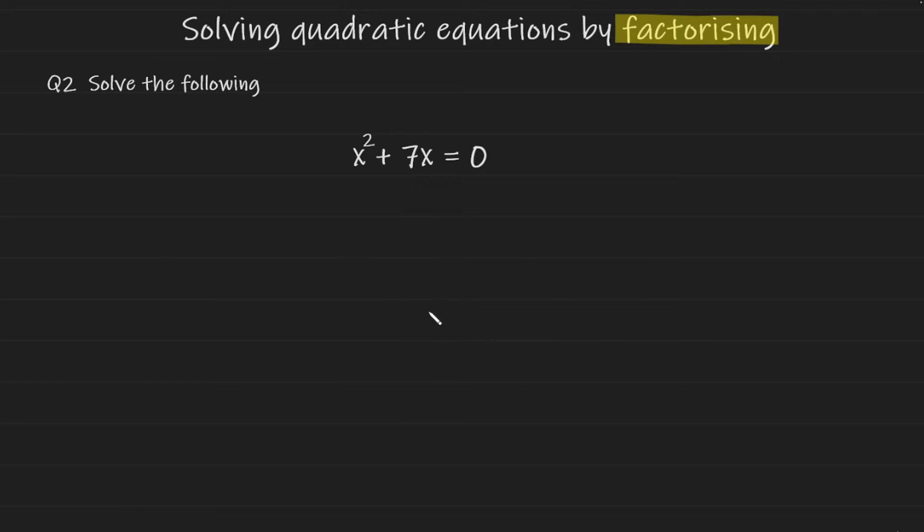Let's take a look at another example. Here we have x squared plus 7x is equal to 0. Now this is an example of a quadratic binomial. Quadratic binomials factorize into a single bracket.